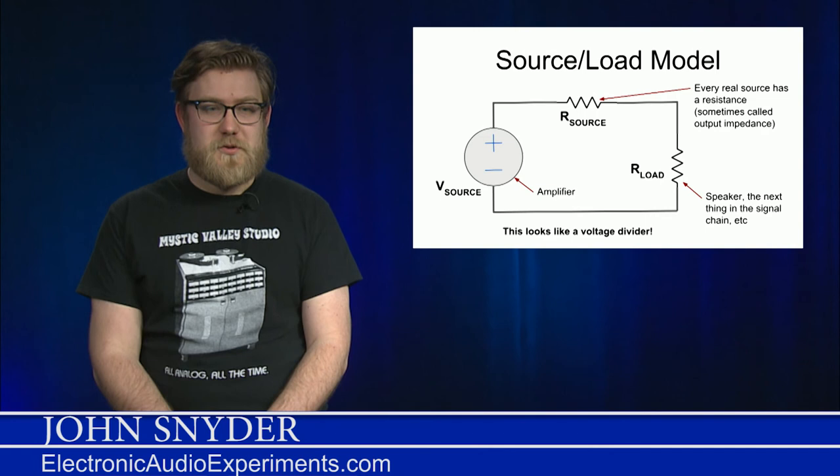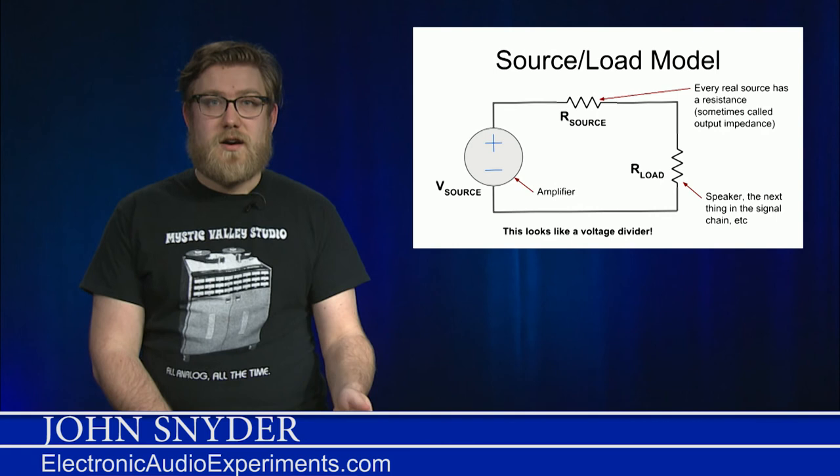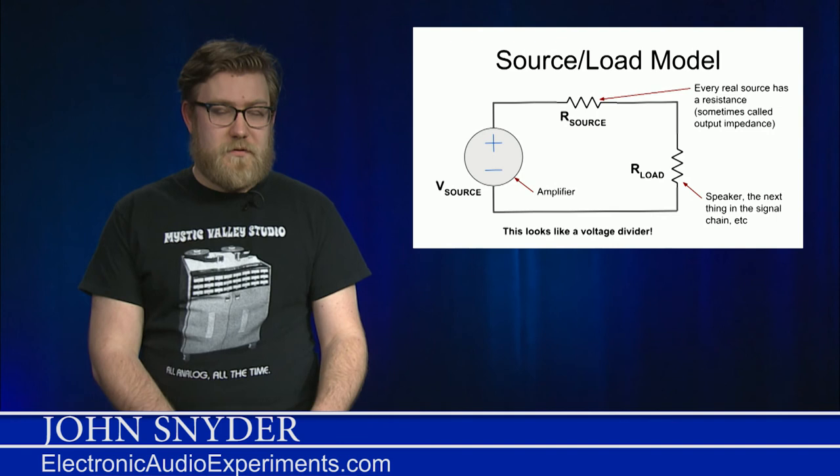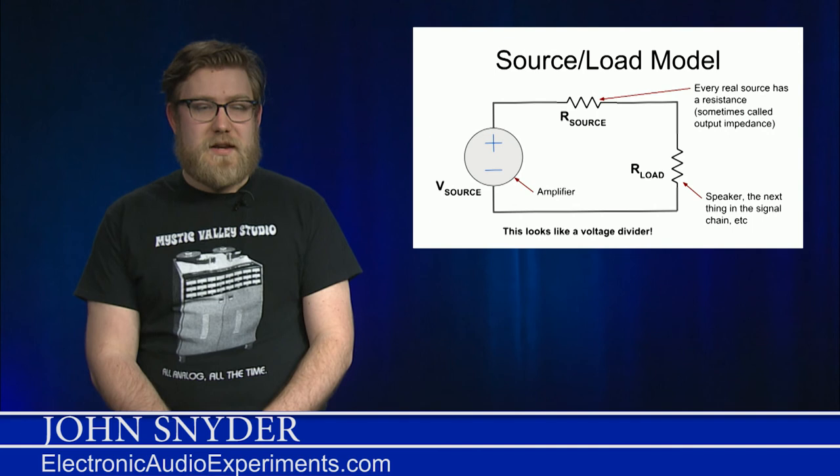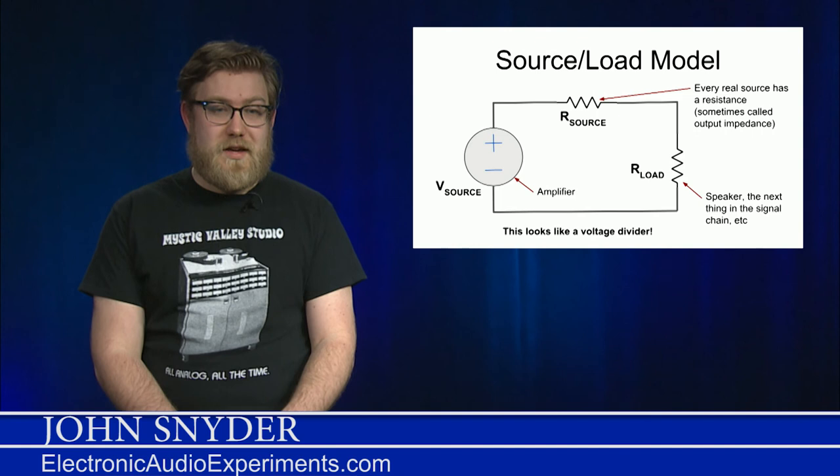Now, in a different system, for example, if you're connecting a guitar to an amplifier, you want the voltage to be as high as possible, not the power. For the voltage to be as high as possible, you want R source to be much smaller than R load. The output impedance of a guitar is pretty high, hundreds of kilo-ohms usually. The input of a tube amplifier, on the other hand, is mega-ohms, millions of ohms.